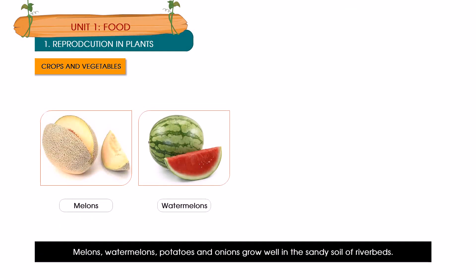Melons, watermelons, potatoes and onions grow well in the sandy soil of riverbeds. Paddy grows in wet and clay soil. Wheat grows well in well-drained soil in the temperate regions. Cotton grows well in the black lava soil and jute grows in light alluvial soil in a hot and wet climate. Tea and coffee plants grow well on hill slopes because they need plenty of water that does not remain standing for a long time near the roots.